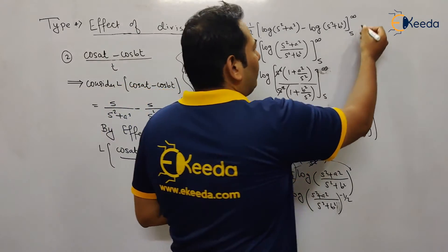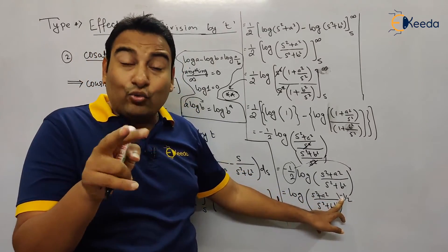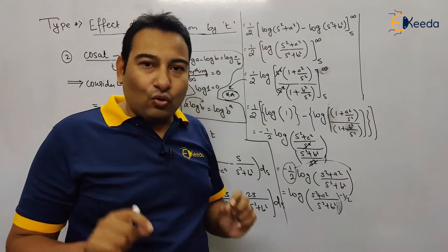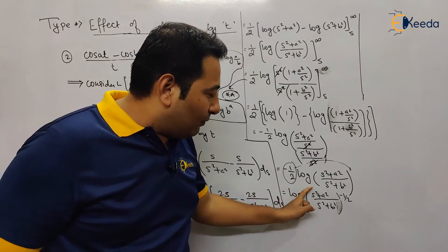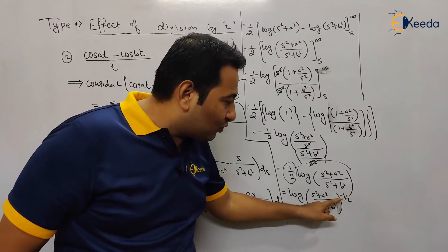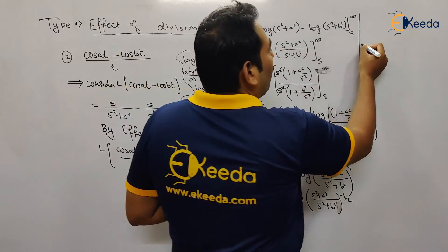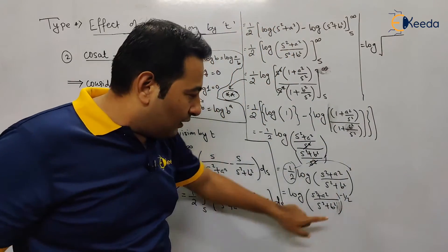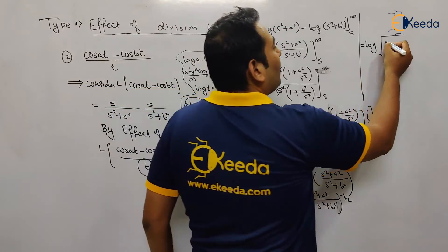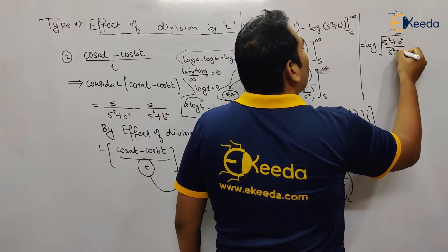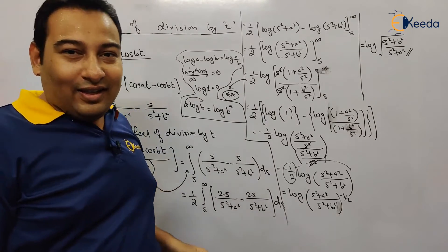The exponent -½ means a square root (the ½) and the negative swaps numerator and denominator. So the final answer is: log √[(s²+b²)/(s²+a²)]. That is the required solution for this particular problem.